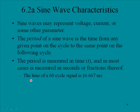The time of a 60 cycle signal is 16.667 milliseconds. So if we took one second and we divided it into 60 parts, then we would get the time. This would be the time of one cycle, and hence one period.